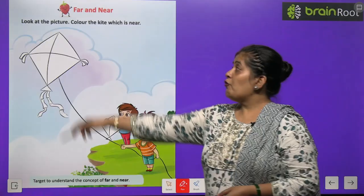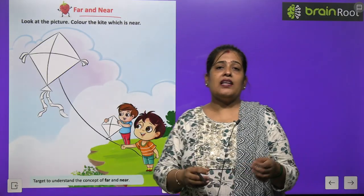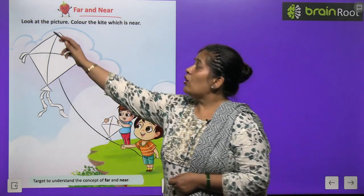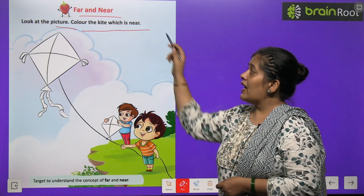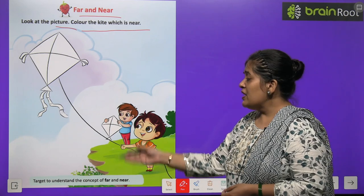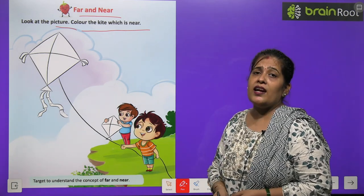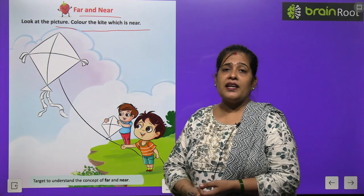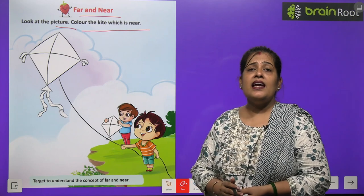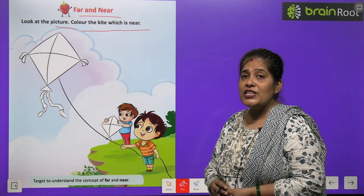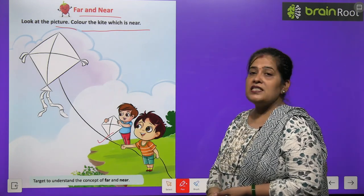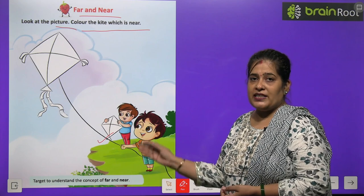Far and near. Far کا مطلب ہوتا ہے دور اور near کا مطلب ہوتا ہے قریب. Look at the picture — color the kite which is near. یہاں پر ایک بہت سندھر سی picture بنی ہوئی ہے جس میں دو boys پتنگ اڑا رہے ہیں. جو kite near ہے اس میں آپ کو بہت سندھر سے color کرنا ہے. This kite is near to the boy, so you have to color it.